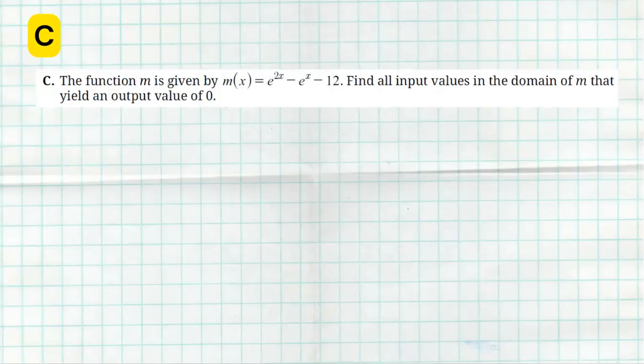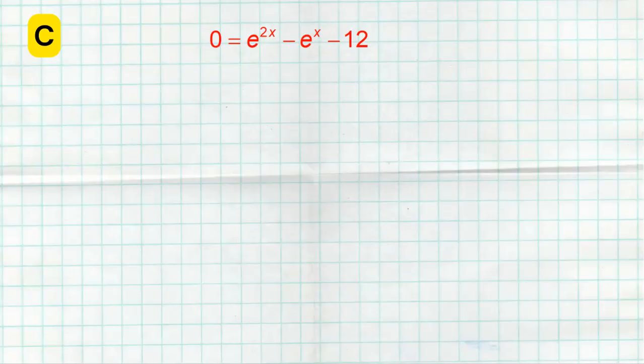Alright, let's move on to part C. This is going to be probably the hardest problem on the free response section. We are asked to solve for where function m has output values of zeros. We're going to find all input values in the domain of m that yield an output value of zero. This is a tough one. It involves a kind of pretty cool strategy that I really hope you learned. And if you didn't, then you unfortunately probably got this one wrong. So first off, let's set it up. We want to figure out where does e to the 2x minus e to the x minus 12 equals zero.